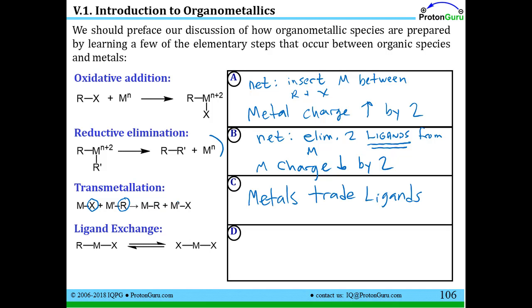You can also have scrambling of ligands in a process called ligand exchange, where you see that the metal starts with an R ligand and an X ligand. But over here, the metal has two X ligands. Of course, those other two R ligands have to go somewhere, and there's another metal that was associated with these. And what happens to those will differ in different cases.